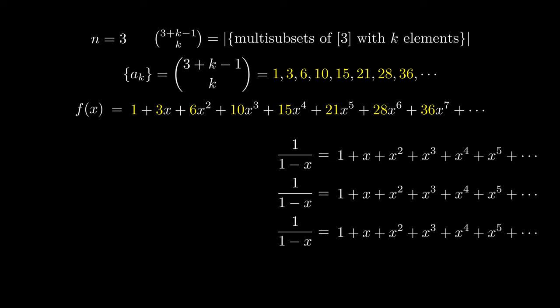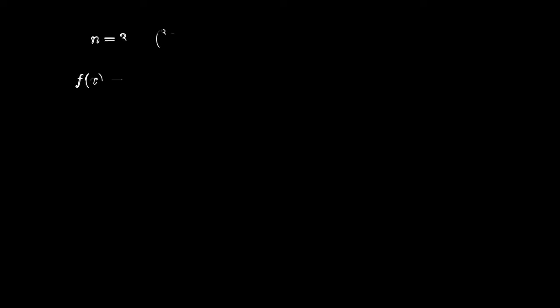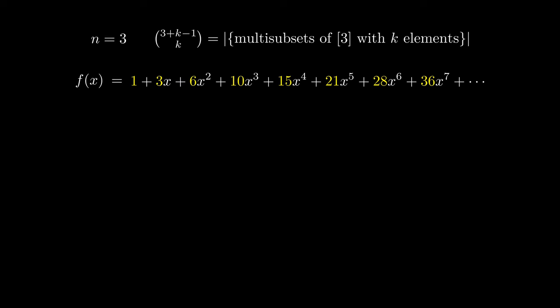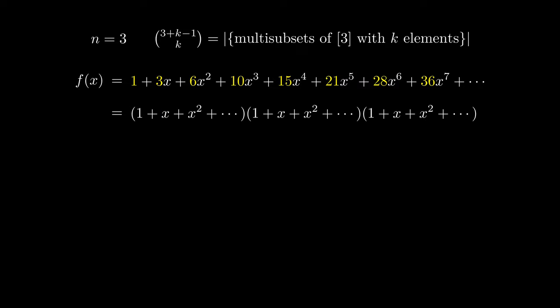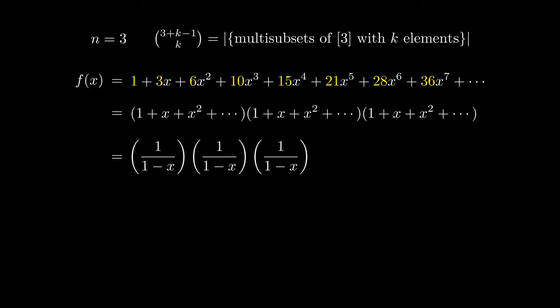This tells us that our generating function can be written in a form that resembles the binomial theorem. To recap: first, we factored the generating function into infinite factors. Next, we rewrote those factors using the infinite geometric series formula. Finally, we simplify this expression by writing it in terms of exponents — specifically negative exponents — to make it resemble the binomial theorem.